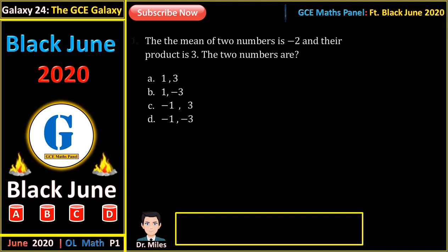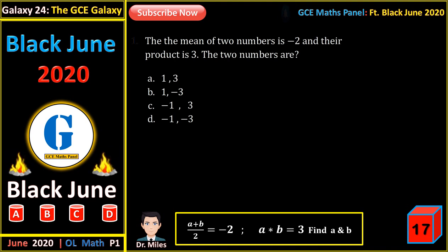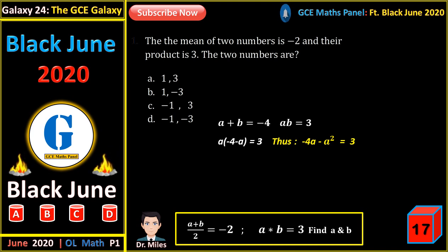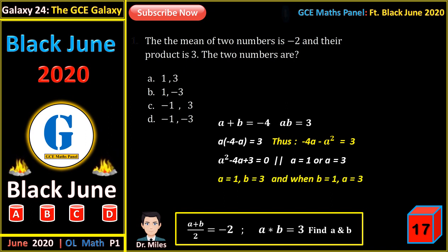The mean of two numbers is minus 2 and their product is 3. Find these two numbers. Let the numbers be A and B. A plus B divided by 2 is minus 2, so A plus B equals minus 4. Their product is 3. Solving by substitution gives the quadratic: minus 4A minus A squared equals 3. This gives values of A as 1 and 3. When A is 1, B is 3, and vice versa. So the numbers are 1 and 3.